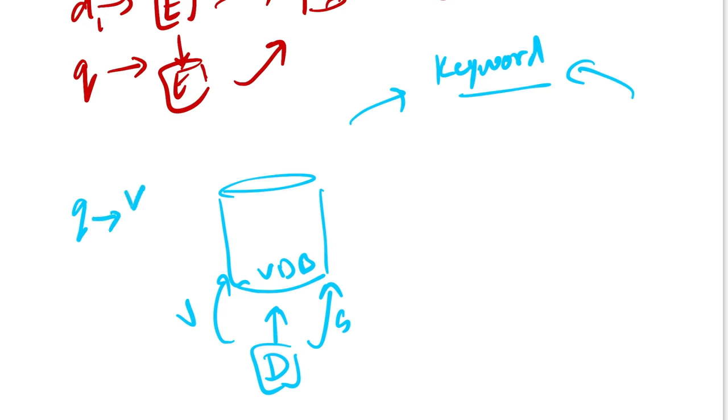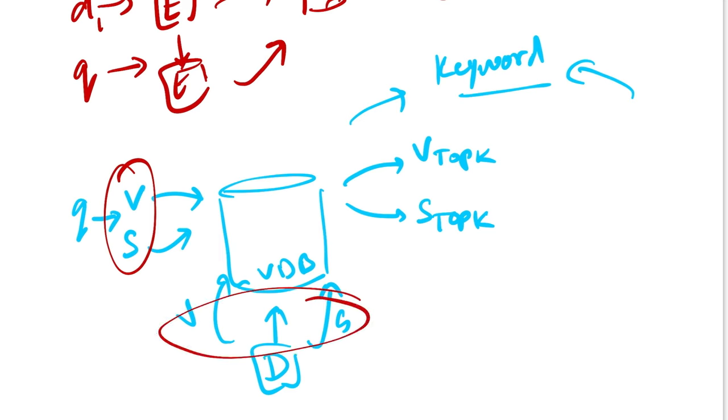For every query you get in, you generate its vector representation as well as sparse representation and do a separate query for each one. As a result, you will get two sets of results: one is your vector top K and other is your sparse top K, because you had the vector and the sparse representation for your queries as well as for every document that you have indexed in the vector database.